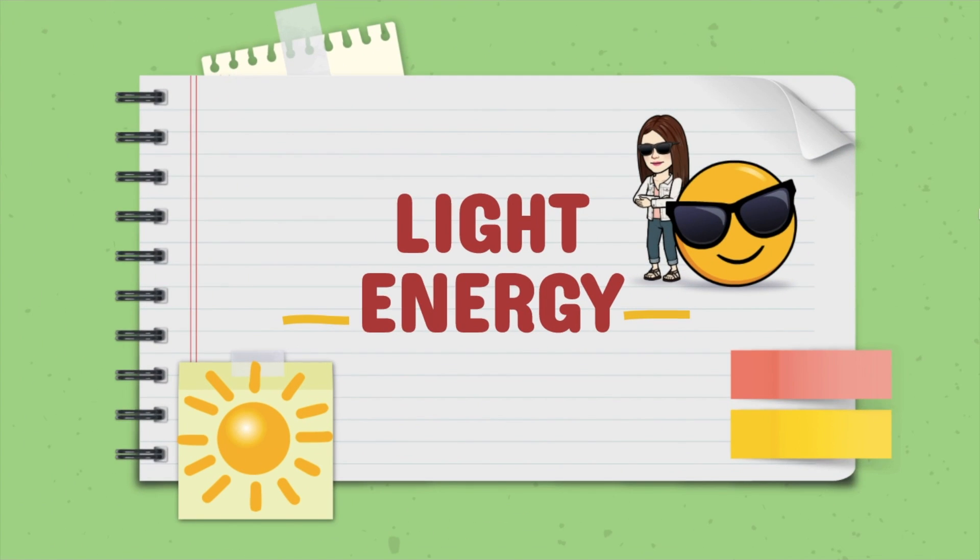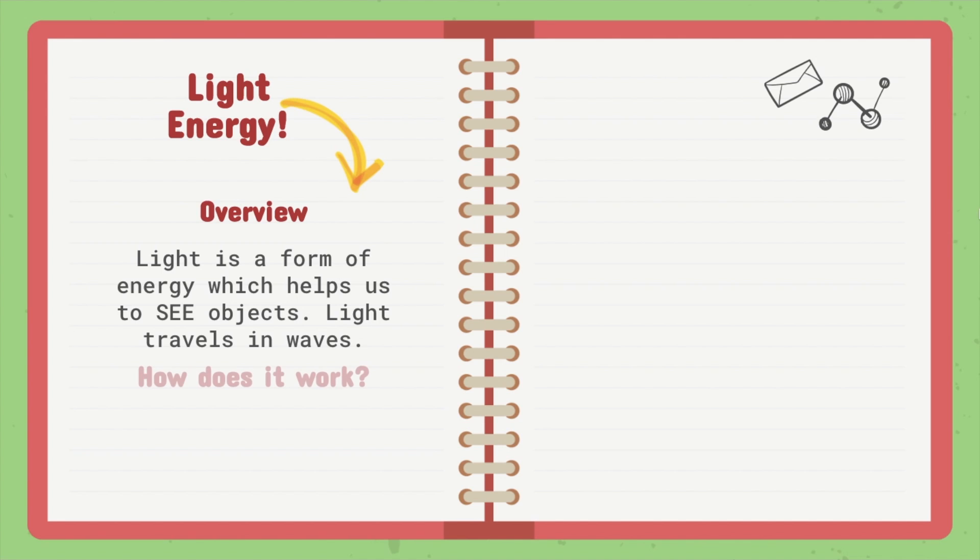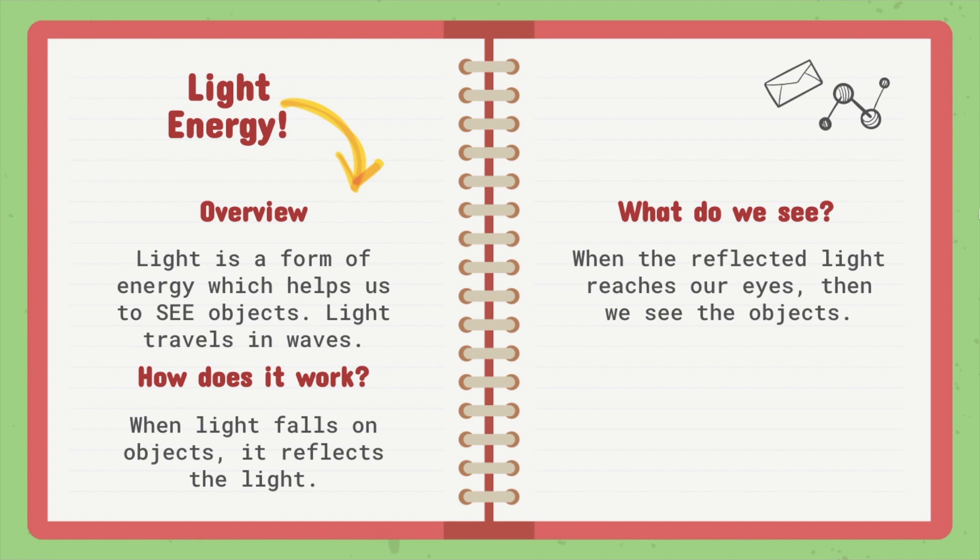Light energy. Light is a form of energy which helps us to see objects. Light travels in waves. So how does it work? Well when light falls on objects it reflects the light. So what do we see? When the reflected light reaches our eyes then we see the objects.